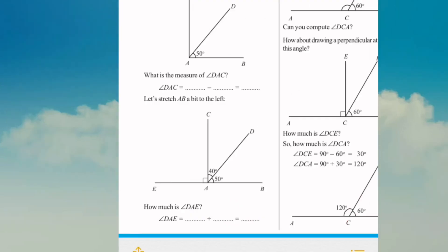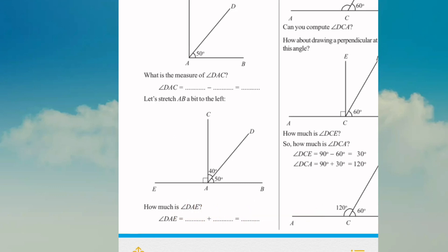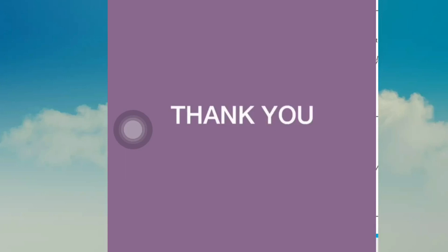First, let's calculate angle CAB. Now, in the next figure, we will calculate the AB line on the left side. Then, how much is angle DAE?